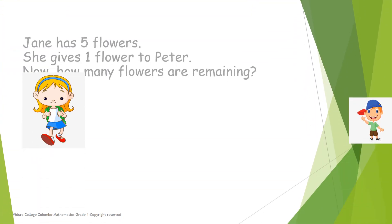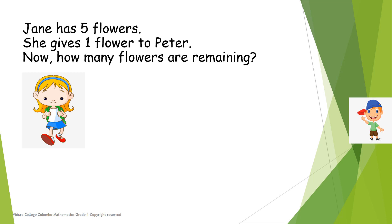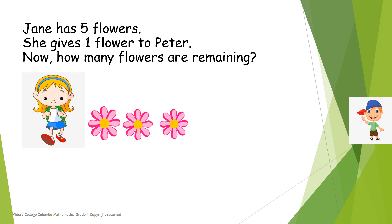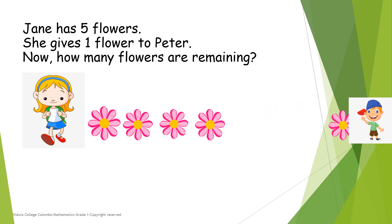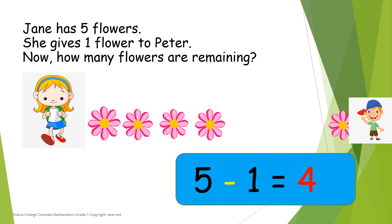Jane has five flowers. One, two, three, four, five. She gives one flower to Peter. Now, how many flowers are remaining? One, two, three, four. Five minus one equals to four.